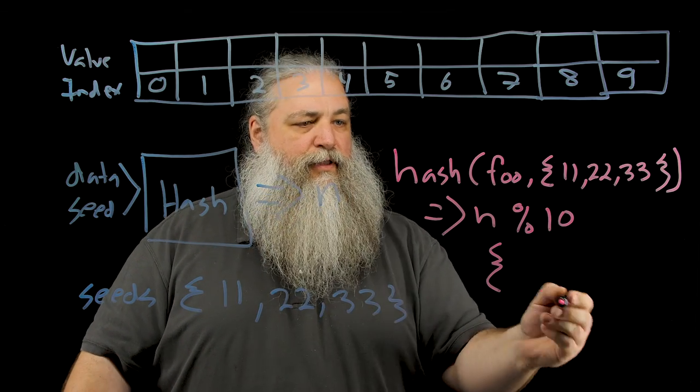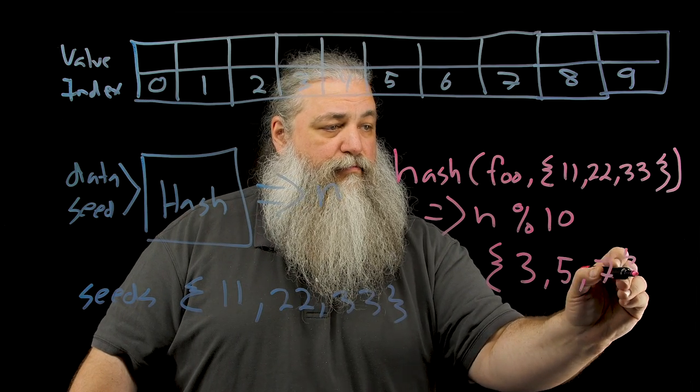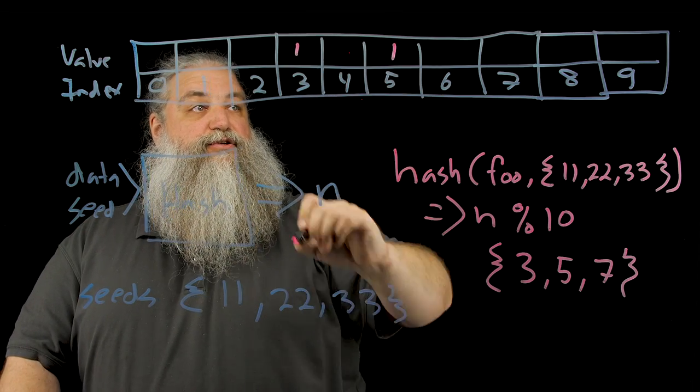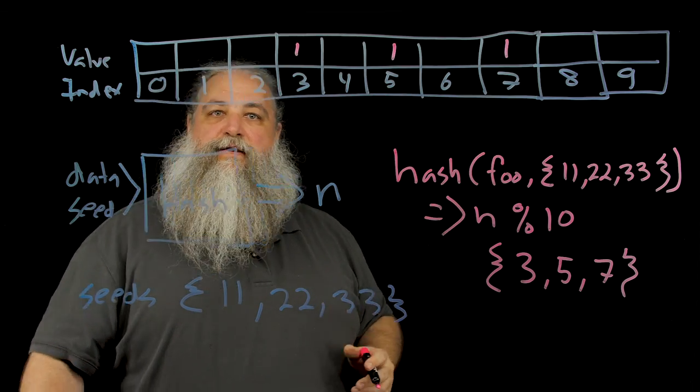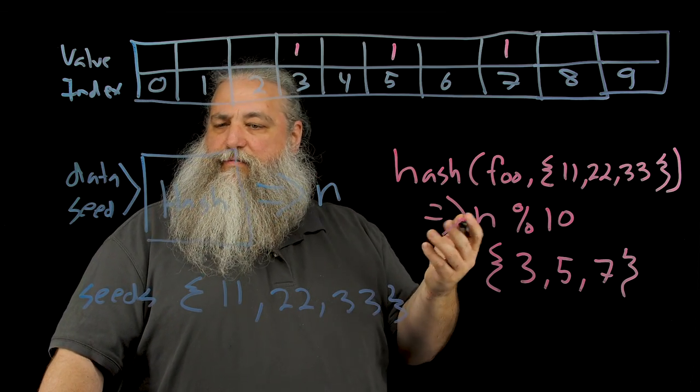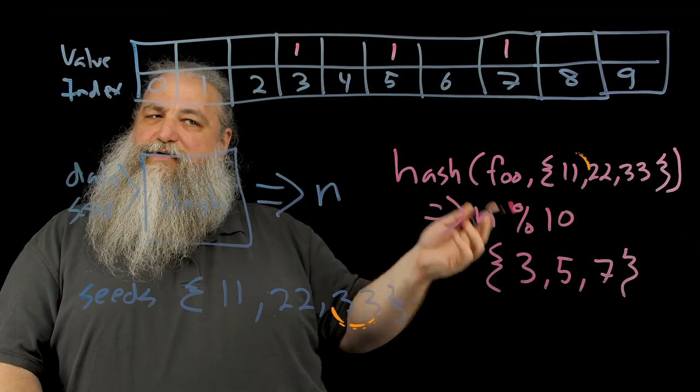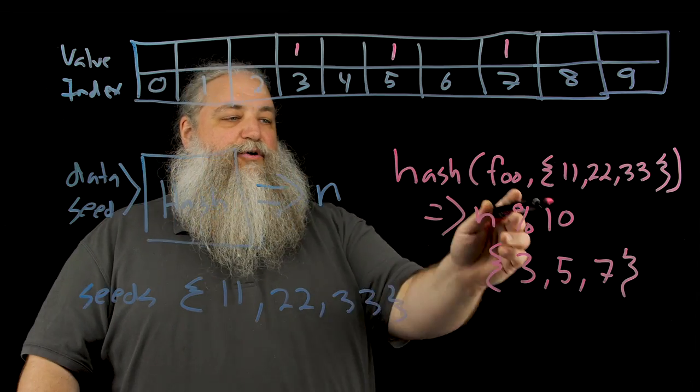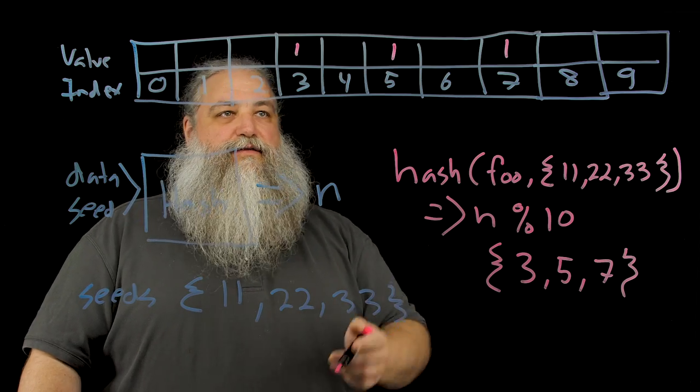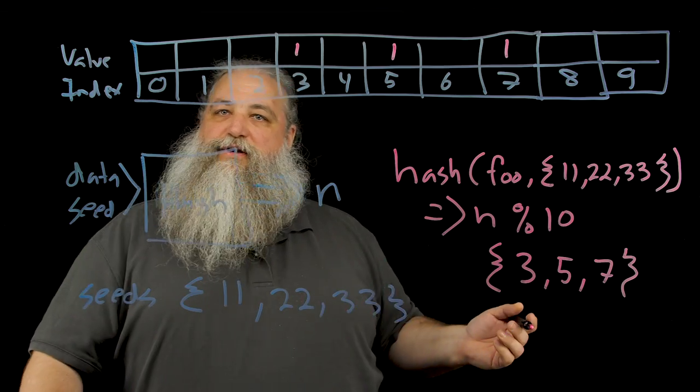Let's just pick some numbers at random, say three, five, and seven. So we put one in the three position, one in the five position, and one in the seven position. Now, when we want to check to see if foo is in the bloom filter, we run foo, we run it through with a hash, three times, one for each seed, get our numbers, and we come up with the values three, five, and seven. And then we look and say, is three high? Yes, it is. Is five high? Yes, it is. Is seven high? Yes, it is. It's probably in the list.